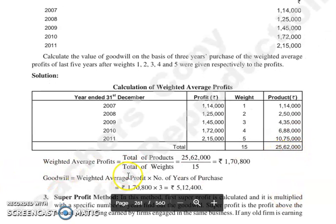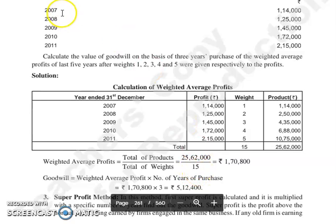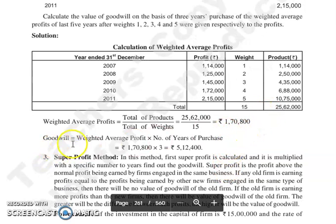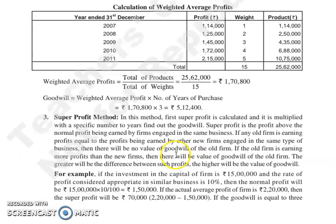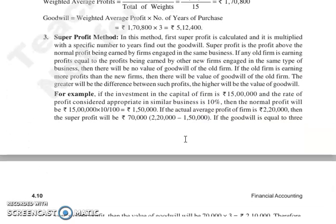Weighted average profit is the total of products divided by total of weights. Total of weights is 15. So 25,62,000 divided by 15 gives weighted average profit of 1,70,800. Number of years of purchase is 3. Goodwill = weighted average profit into number of years of purchase = 1,70,800 into 3 = 5,12,400.